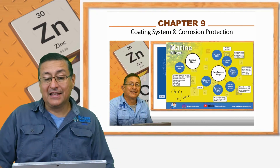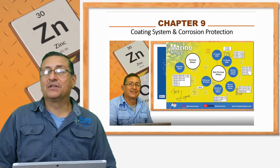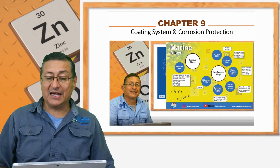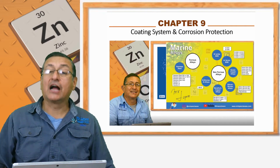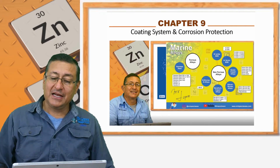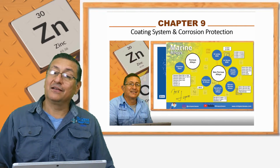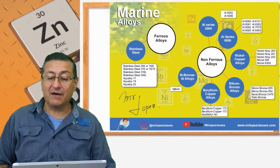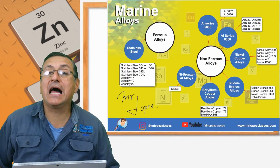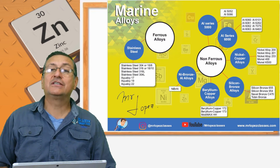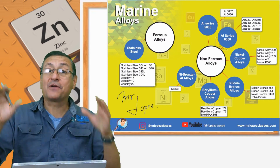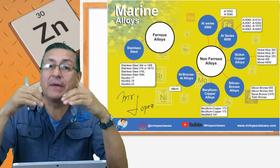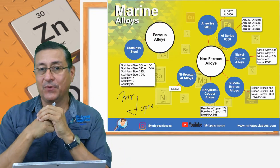In Chapter 9, we are going to cover coating and corrosion protection. We are going to study another wonderful poster featuring marine alloys: ferrous alloys and non-ferrous alloys, and we will analyze the different types of alloys recommended for the marine environment.